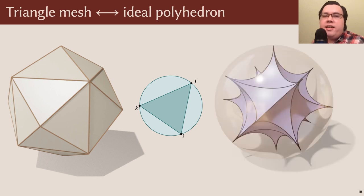If we attach all these ideal triangles together, we obtain an associated ideal polyhedron. And moreover, the edge lengths of the mesh gave us a particular choice of horospheres at the vertices of this ideal polyhedron.